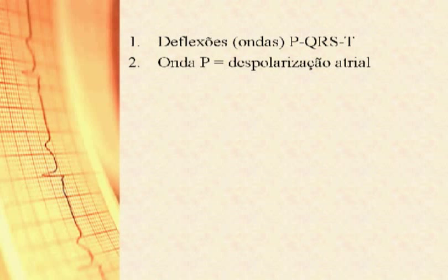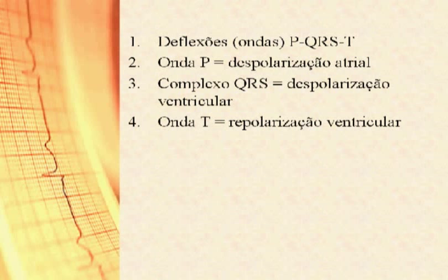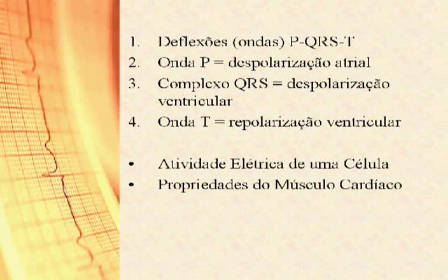A onda P corresponde à despolarização ou contração atrial. O complexo QRS corresponde à despolarização ou contração ventricular. A onda T representa a repolarização ou relaxamento ventricular. A formação das ondas PQRST sempre precede à contração muscular. Para compreender esses eventos é necessário entender três pontos principais: a atividade elétrica de uma célula isolada, as propriedades contráteis e elétricas do músculo cardíaco e a geração de um eletrograma.